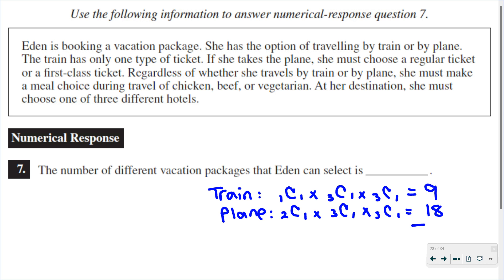So train or plane, those are cases, add those up together. And there are 27 different vacation packages that Eden can select.